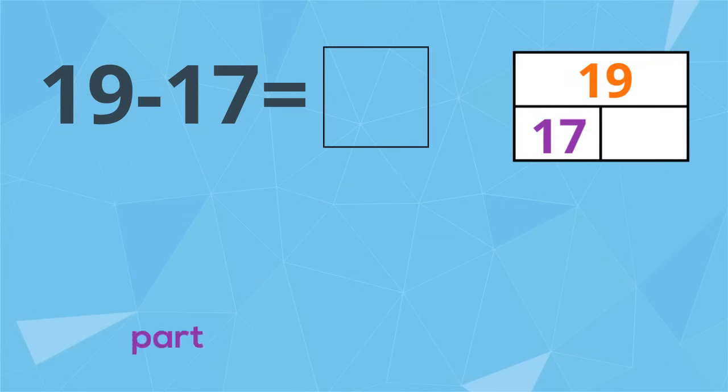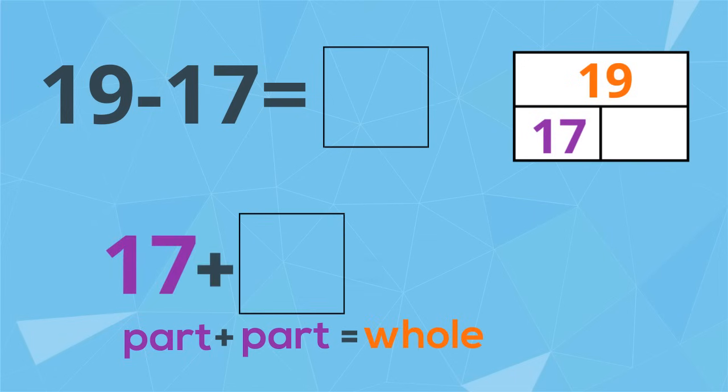We know that the part plus the part equals the whole. That means 17 plus something equals 19. We know that 17 plus 2 equals 19. That means that 19 take away 17 must equal 2.